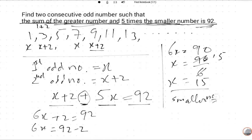The smaller number is 15 and the greater number will be X plus 2, which is 15 plus 2 equals 17. So these are the two consecutive odd numbers. Thank you so much. Please like, comment, and share this video.